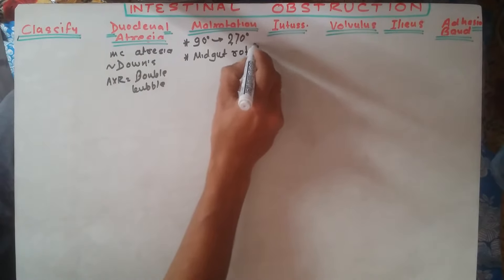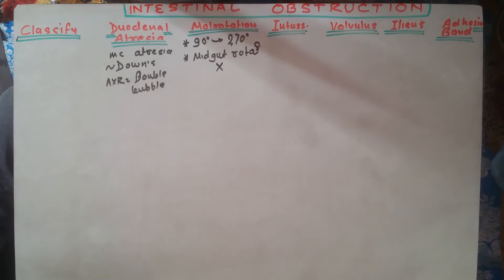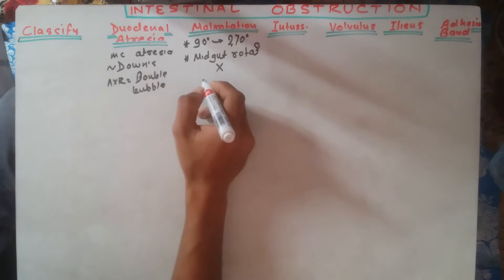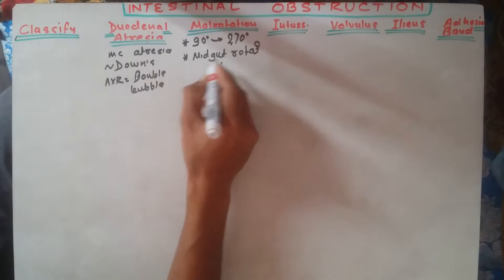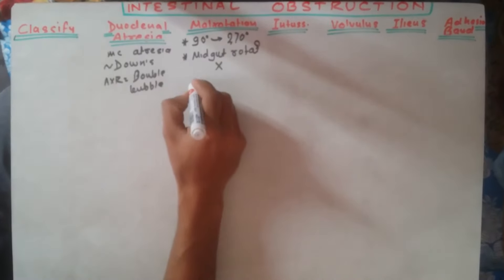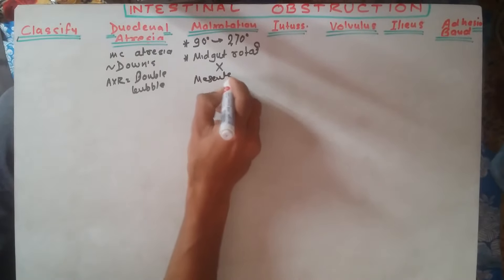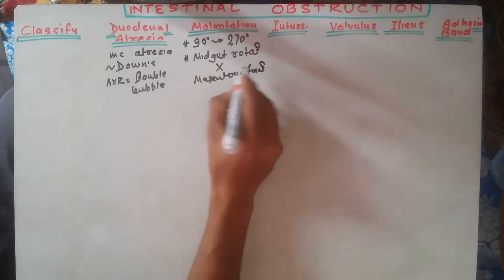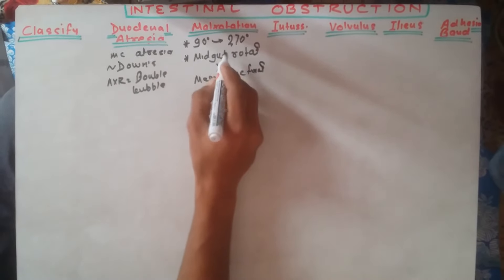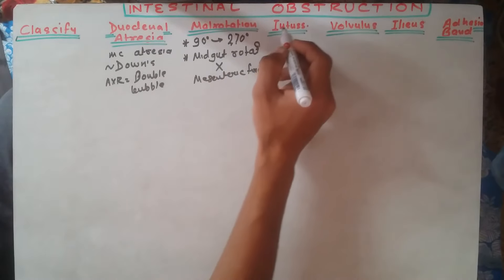Malrotation results in abnormal fixation of the mesenteric part. The midgut mesenteric fixation is abnormal in malrotation.